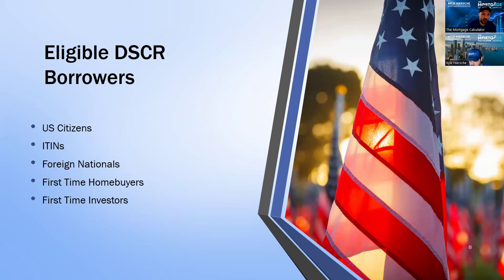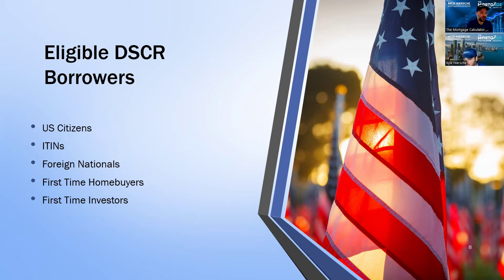What types of borrowers can we do? All of our programs are eligible for US citizens. Some programs are eligible for ITINs, which may not have legal status or a legal work permit but are still here. Then we have true foreign nationals who truly make their income and don't live here. We also have options for first-time home buyers and first-time investors — even if you've never owned a property or never had an investment property, you can still do a DSCR loan with some of our options.